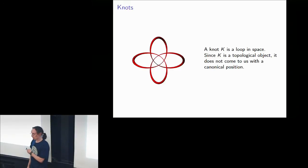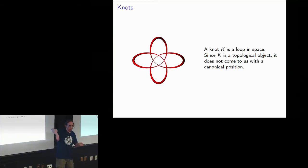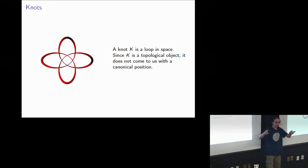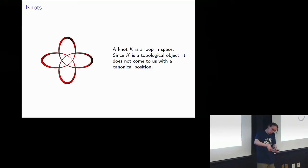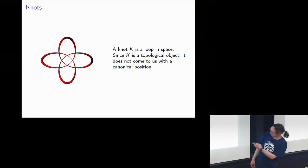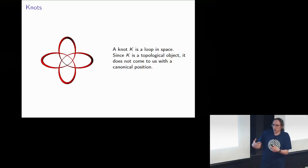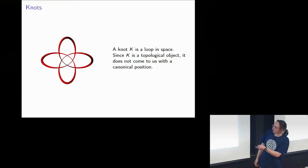Let me say what knots are. A knot is a loop in space. You take a piece of string, tie it in a knot, and then you must join the ends together. A piece of string with free ends can always be untied by doubling back — just like you can always untie your shoelaces. But if you join the ends together, you can't necessarily unknot it. Since knots are just topological things — just loops in space — they don't come with a best position, so we'd like to find the best position.